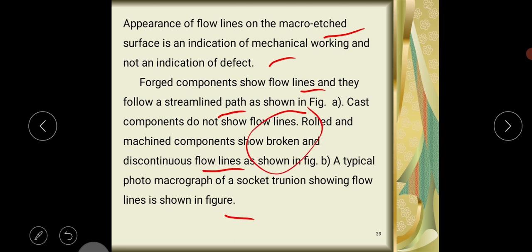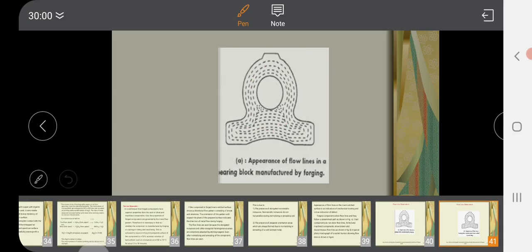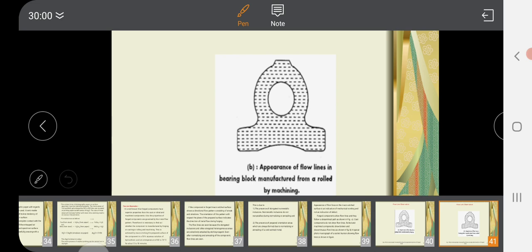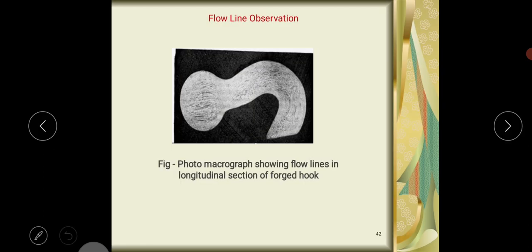A typical photomicrograph of a socket shows flow lines in the figure. We will see this figure one by one. This is the flow line observation: a photomicrograph showing flow lines in longitudinal section of the forged hoop. This is the appearance of flow lines in a bearing block manufactured by forging. This is the flow line. This is the appearance of flow lines in a bearing block manufactured from a roll by machining. These flow lines are different. And this is the hoop where the flow line is like this.